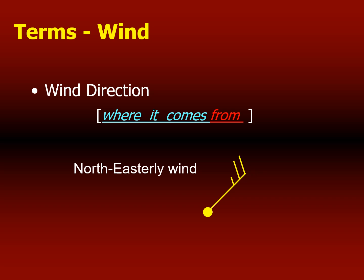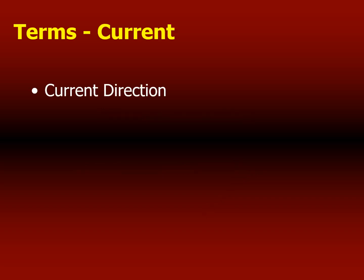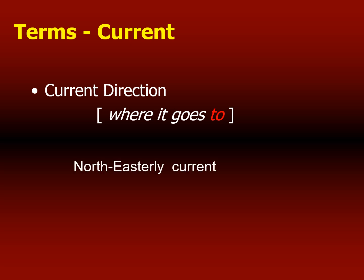Whatever the wind speed is, that will be determined by the lines on the side. In terms of currents, current direction is normally drawn to the direction where it goes to. This is how it is different from wind — wind direction is drawn where it comes from, but current direction is drawn where it goes to. If the current is northeasterly, you will draw it towards the northeast direction. The three arrows on the straight line denote the direction of the current, pointed towards where the current is going.